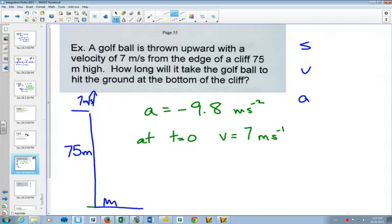So at t equals 0, we know our velocity is equal to 7 meters per second. What else do we know? Now if we make ground level 0, which is normally what people would do in a situation like this, then we also know at time equals 0 that our displacement is 75. It's starting 75 meters above the ground.